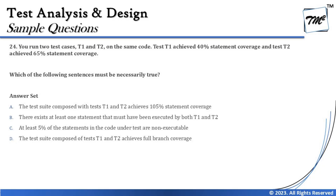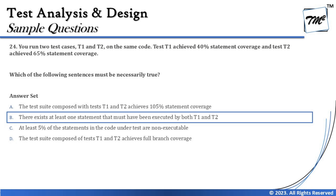The right answer for question 24 is B: there exists at least one statement that must have been executed by both T1 and T2. This requires close attention to detail — a quick glance might make you think 40 plus 65 equals 105, but a little understanding tells you that you cannot go beyond 100% statement coverage. That's how to deal with such questions.